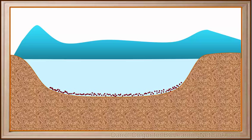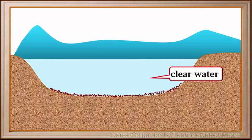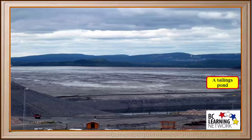They'll form new layers of silt or clay on the bottom of the lake. As the silt or clay settles out, the water becomes more clear. Industry also uses gravity separation. This is called the tailings pond, and it is used to store waste materials from a mine.